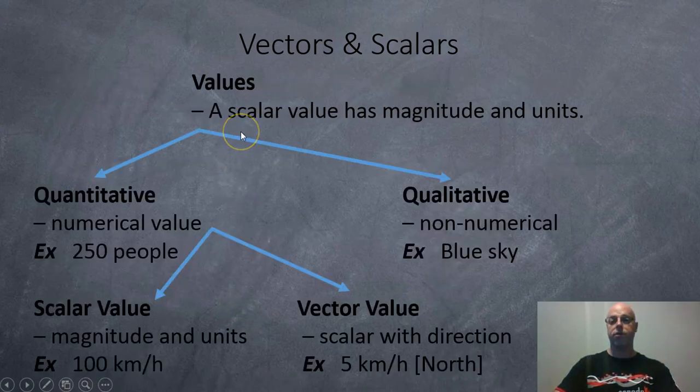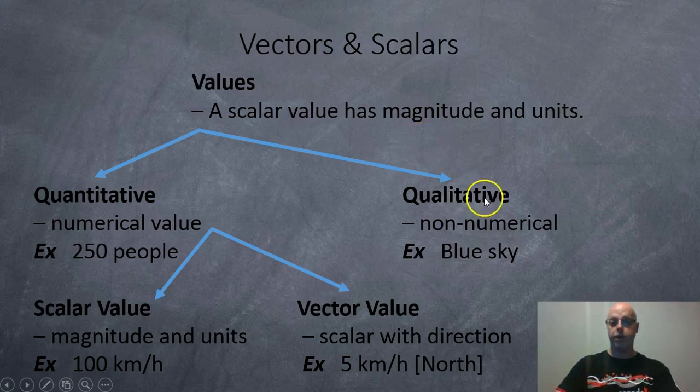Overall when you do look for values there's qualitative which are non-numerical like the sky is blue the room is warm. Quantitative which has a numerical value for example 250 people or the room temperature is 30 degrees Celsius.